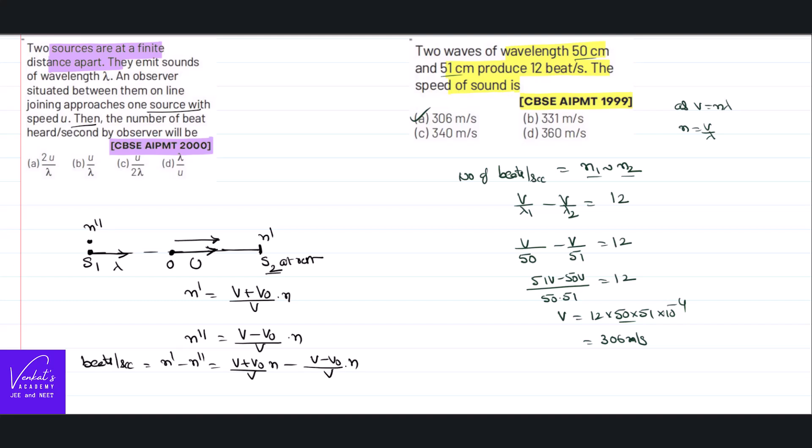So what is common is n by v: v plus v₀ minus v minus of minus is plus v₀. v and v will cancel, so 2 into velocity of the observer by velocity of the sound. It is given that velocity of the observer is u by velocity of the sound is the answer for the problem.